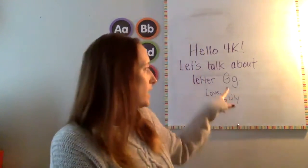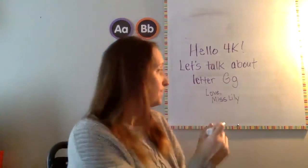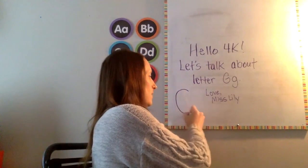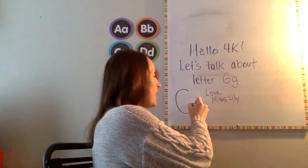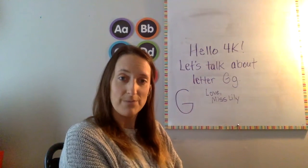So to make a letter G — an uppercase G starts with, if you look at it, here's the uppercase G. It starts with a big curve like a C. So we're going to make a big curve around and then we're going to do a short line right into the curve. There's our uppercase G.